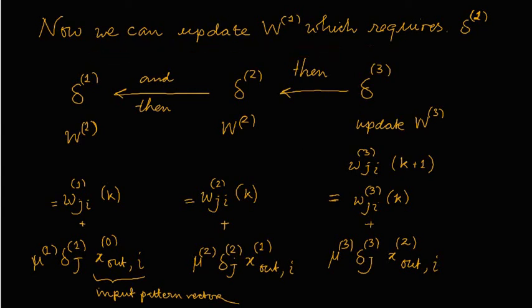This is the process which is propagating backward — that is why the name of this algorithm is error backpropagation. With this I close this lecture, and thanks to all of you. In the next lecture we will further discuss with some more examples. Thank you.